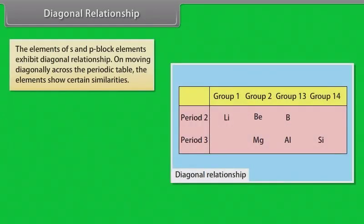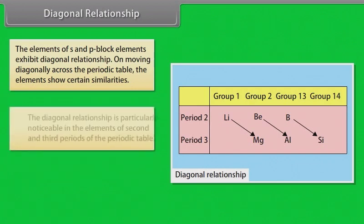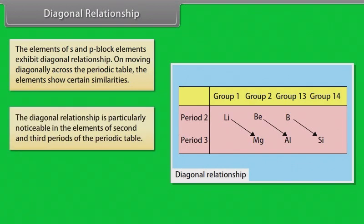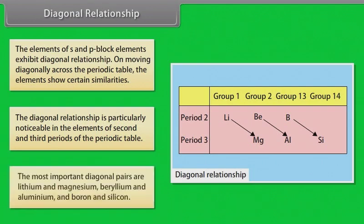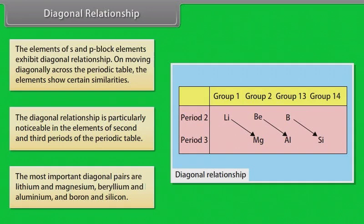Diagonal relationship. The elements of S and P-block exhibit diagonal relationship. On moving diagonally across the periodic table, the elements show certain similarities. This is particularly noticeable in the elements of the second and third periods. The most important diagonal pairs are lithium and magnesium, beryllium and aluminium, and boron and silicon.